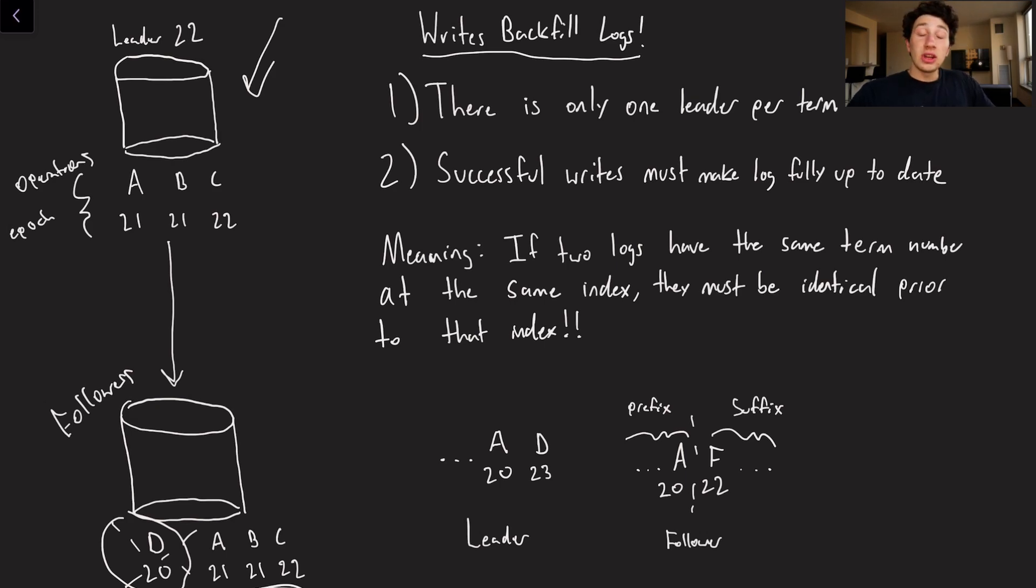So like I mentioned writes in addition to just writing the new value also backfill logs. So let's now talk about a special invariant in Raft that is very important to keep the correctness of this entire algorithm. So it is going to rely on a couple of facts. One, there is only one leader per term. We covered that last video. The reason there's only one leader per term is because we need a quorum of nodes to be elected leader and within a term you can't obviously have two quorums agreeing on the leader. So again, one leader per term.